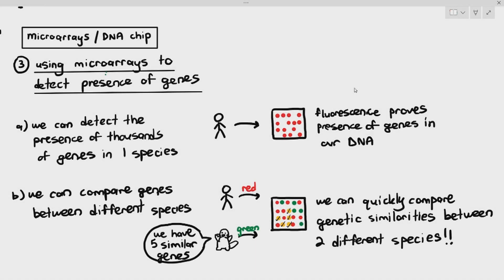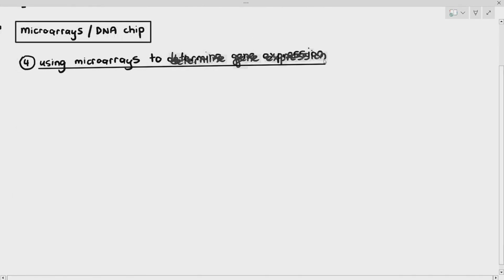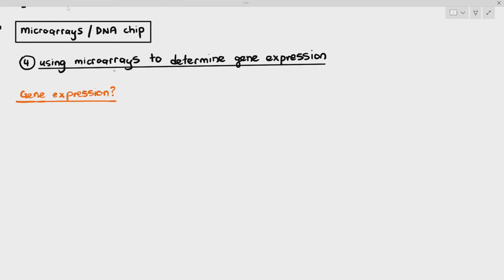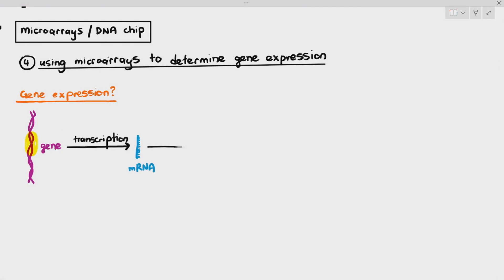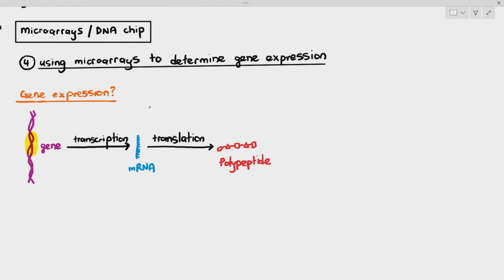The video on microarray is extremely long, so it's being split into two separate videos. The second function of the microarray is to determine something known as gene expression. Gene expression means that the gene in our cells undergoes transcription to produce mRNA, and when the mRNA is translated, the polypeptide is synthesized.